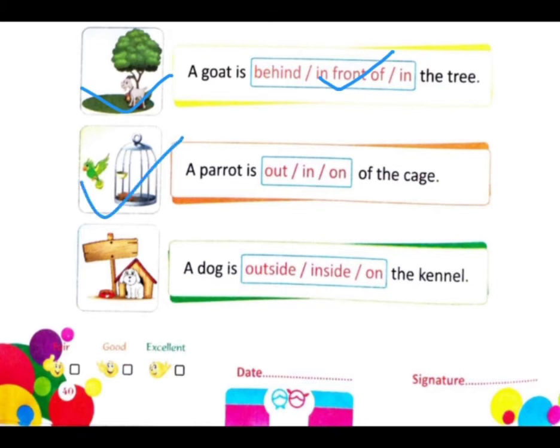Okay, next — a parrot is out / in / on of the cage. जो parrot है वो अपने पिंजरे से बाहर है। तो बाहर का क्या होता है English means? Out. So हम यहां टिक करेंगे।